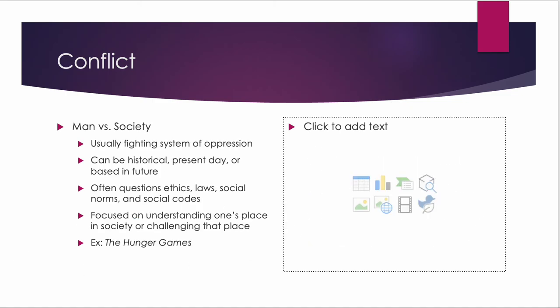Man versus society is typically a more abstract concept — usually someone or a group fighting against systems of oppression. A lot of sci-fi leans heavily into this 'big brother' type of idea. It can be historical, present day, or set in the future, and it often looks at questions around ethics, laws, social norms, and social codes. It's focused on understanding or challenging one's place in society. A great example is The Hunger Games, where one person inspires a movement that rises up against an oppressive system of government.